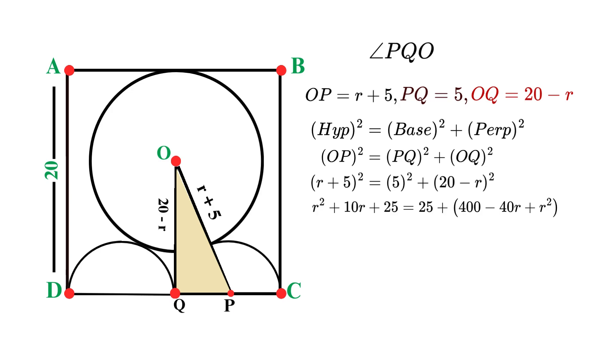So the entire right side becomes 25 plus 400 minus 40R plus R², which simplifies to 425 minus 40R plus R². So the equation now looks like this: R² plus 10R plus 25 equals 425 minus 40R plus R². Now let's simplify. First, we can cancel R² from both sides because it appears on both sides of the equation. Next, subtract 25 from both sides, which effectively cancels the 25 on the left.